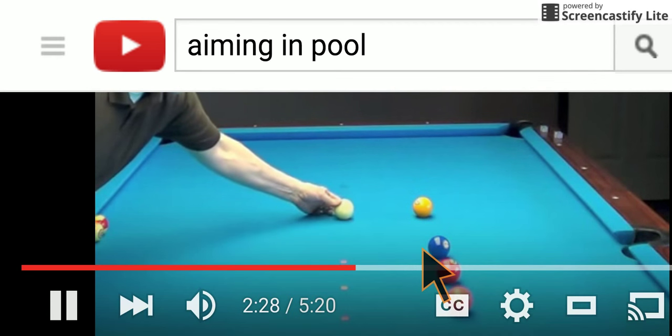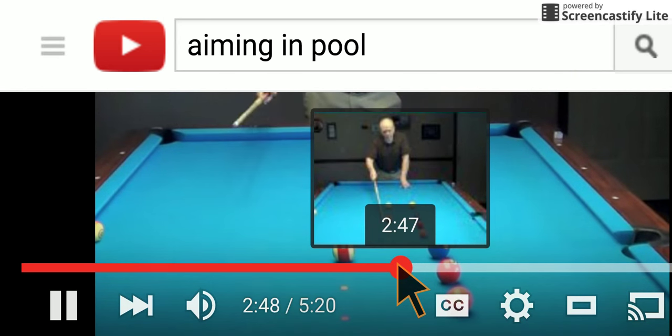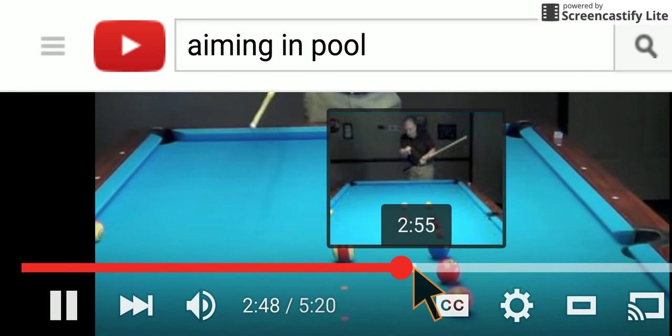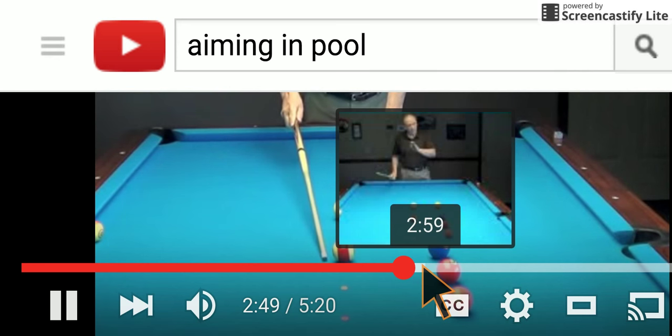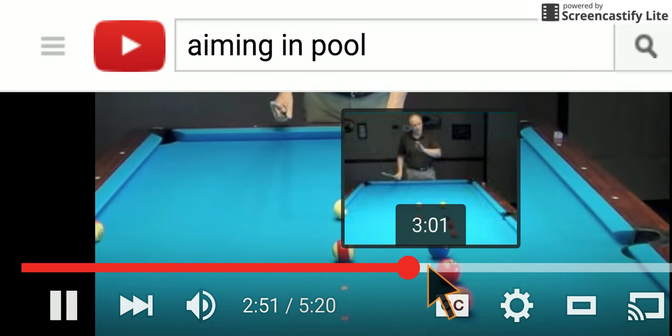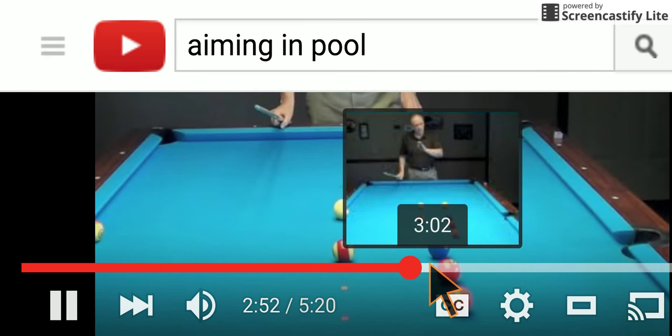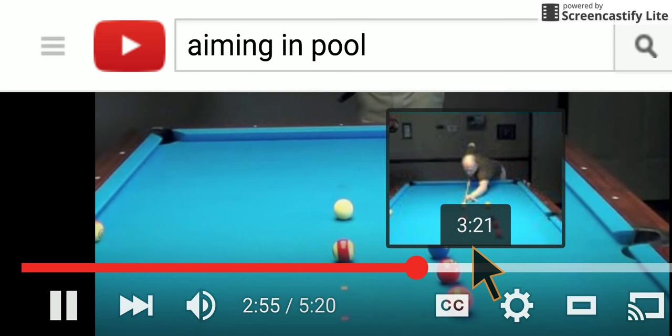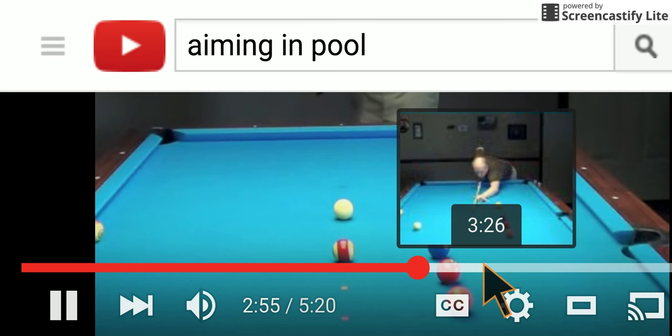Now let's move ahead in this video to the next shot. We might as well go through all three of these CTE shots. Now keep in mind, all three of these shots are aimed using center-to-edge aiming. So Stan is explaining here that he doesn't even know what the angle is or what the shot line is. He's just using the center-to-edge aiming system to get down on the shot and shoot it.